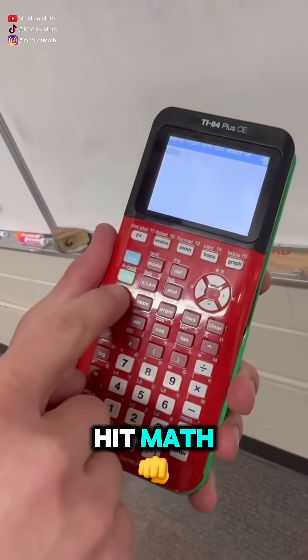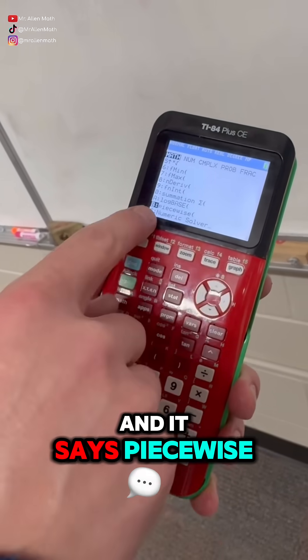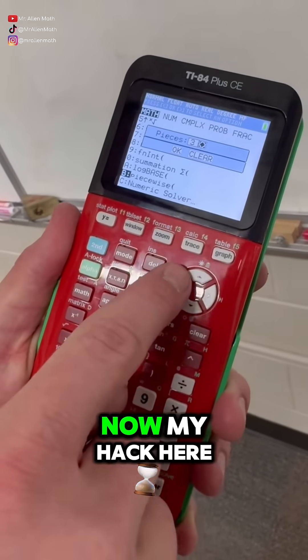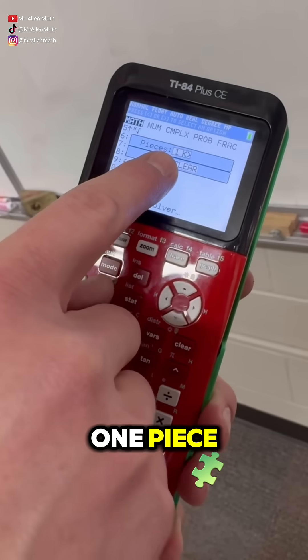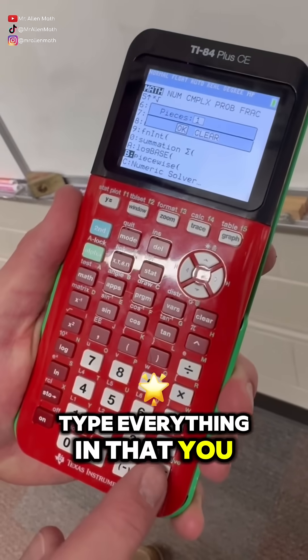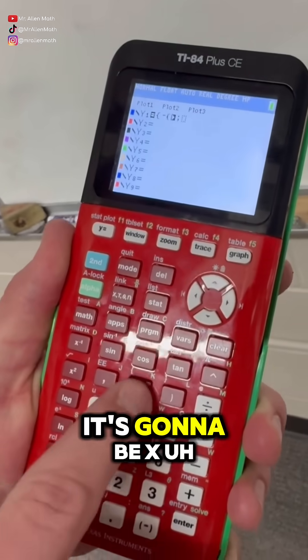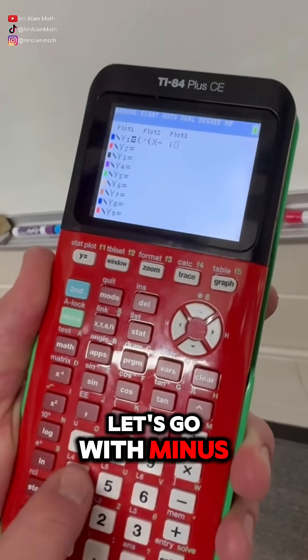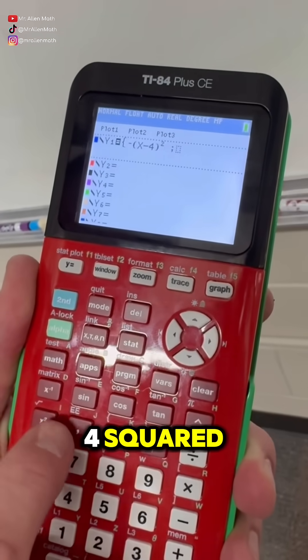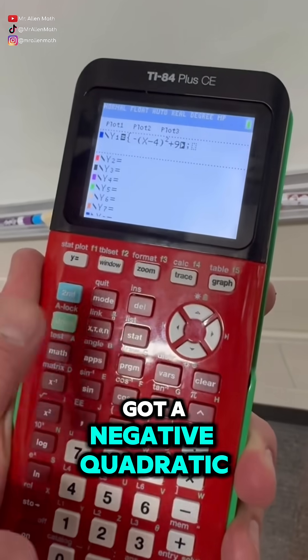Now in here I'm gonna hit math and go down to the bottom and it says piecewise. Hit enter on that. Now my hack here is I always go one piece because otherwise you gotta type everything in that you wanna use. So I'm gonna do a negative and then it's gonna be X, let's go with minus four squared and then we'll go plus nine. So I got a negative quadratic.